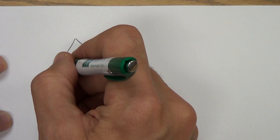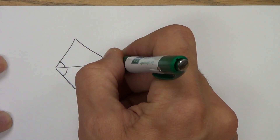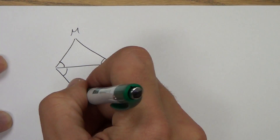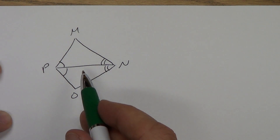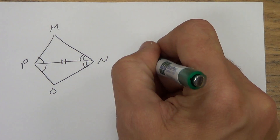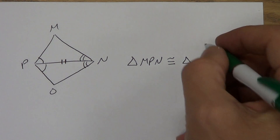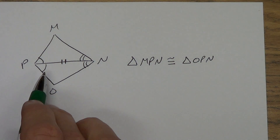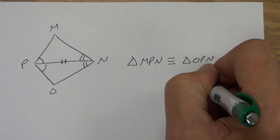Let me give you another quick example, and then remember the next video is going to be actual two-column proofs with statements and reasons. Let's draw two triangles here. I'm going to tell you that this angle is congruent to that angle, and that angle is congruent to that angle. Let's use letters M, N, O, P. Are these triangles congruent? If I use the reflexive property on the shared side in the middle, I can say PN is congruent to PN. Now the triangles are congruent: triangle MPN is congruent to triangle OPN by the angle-side-angle congruence postulate.